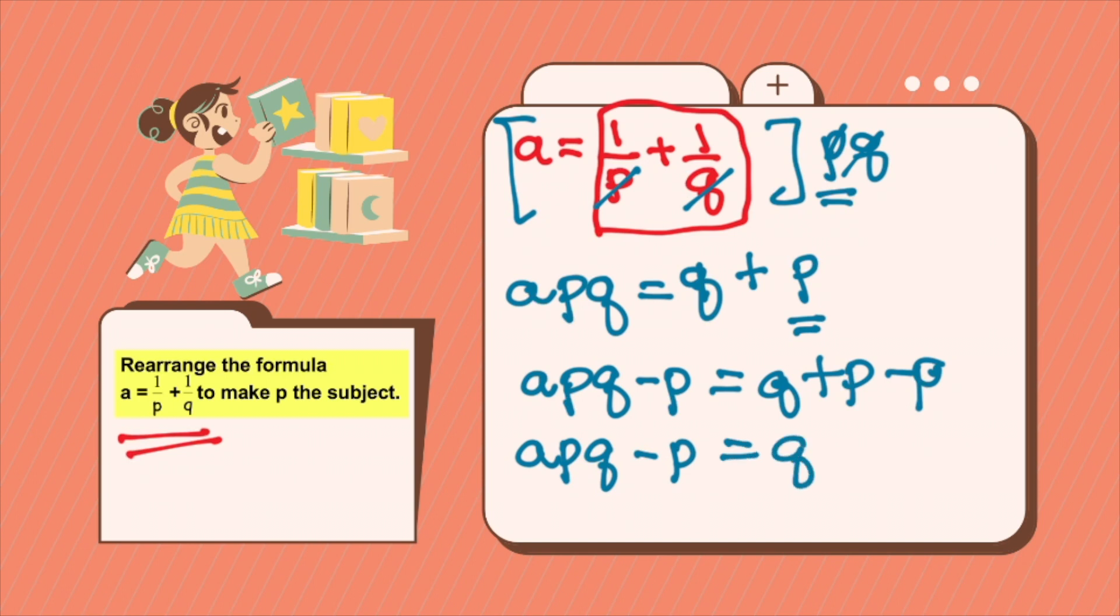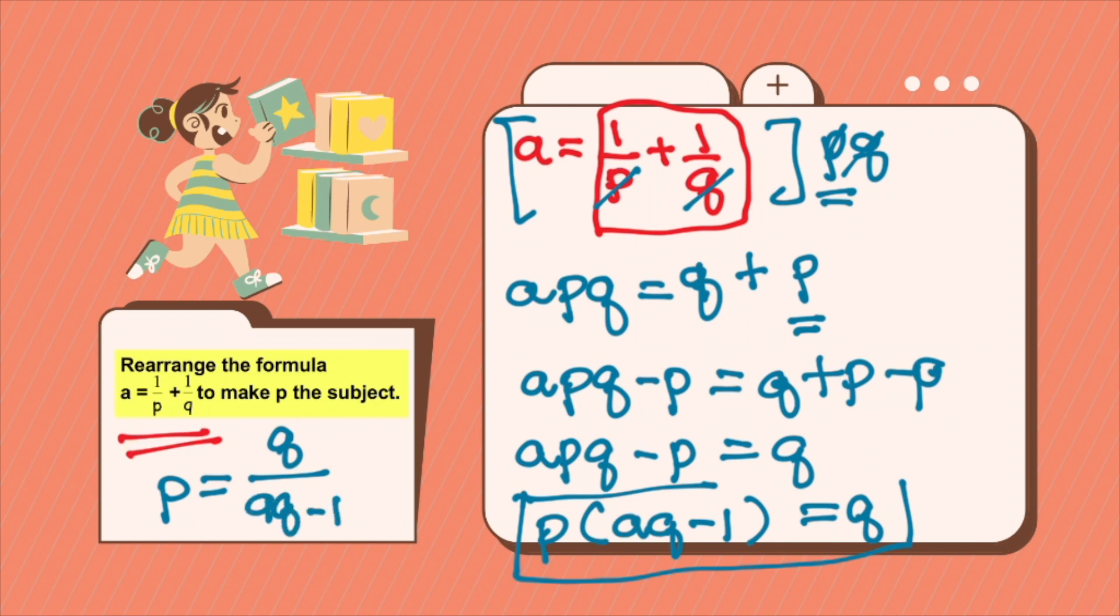Now since you only need p, we will factor out p from this side, on the left side, p times aq minus 1 equals q. Therefore, your final answer after this will be p equals q over aq minus 1.